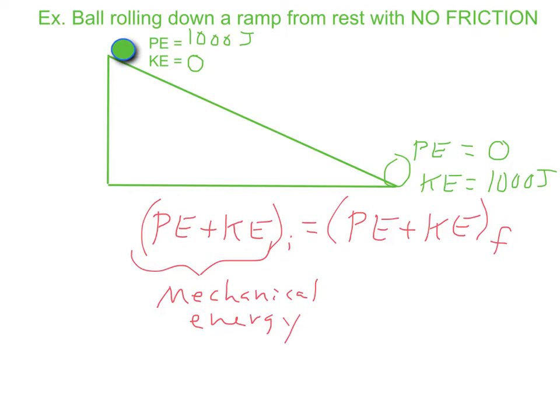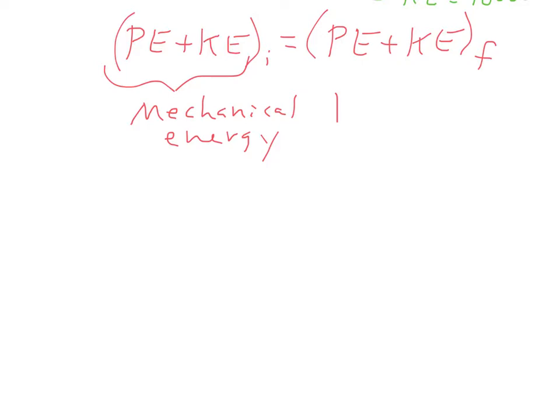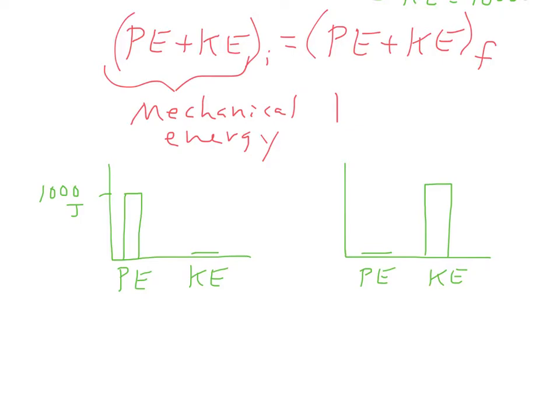So we're saying that the total mechanical energy of the system doesn't change before and after as long as there are no external forces acting on it. We can illustrate this as a graph. For the ball before it's released, we can make a bar graph. It started with a thousand joules of potential energy and no joules of kinetic.